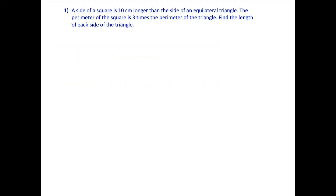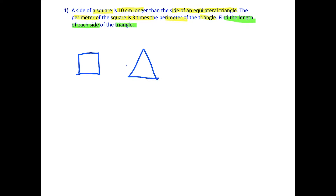For this first question, we have: the side of a square is 10 centimeters longer than the side of an equilateral triangle. We're told that the perimeter of the square is three times larger than the perimeter of the triangle. The question is asking us to find the length of each side of the triangle.